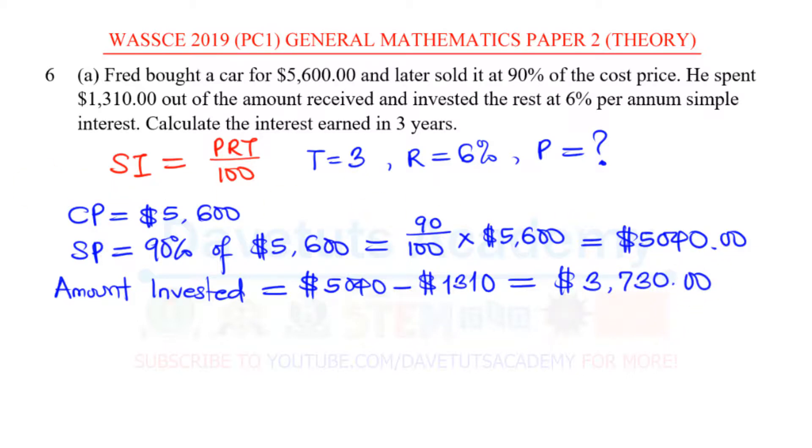So this is his principal. That is where we are actually going. This is the principal for him. Now, we can say the principal that we are looking for, we have gotten to be $3,730.